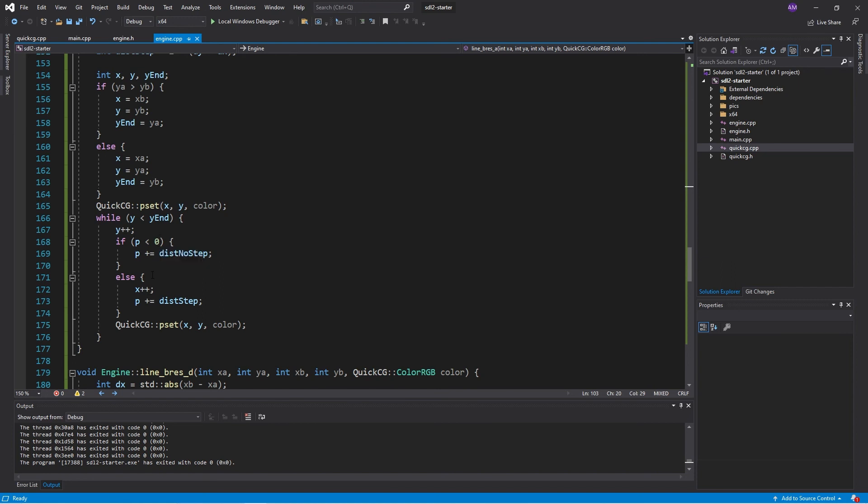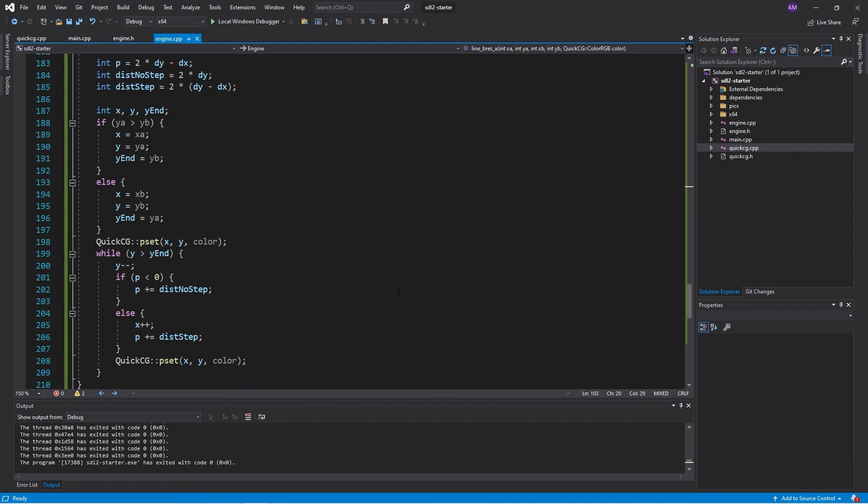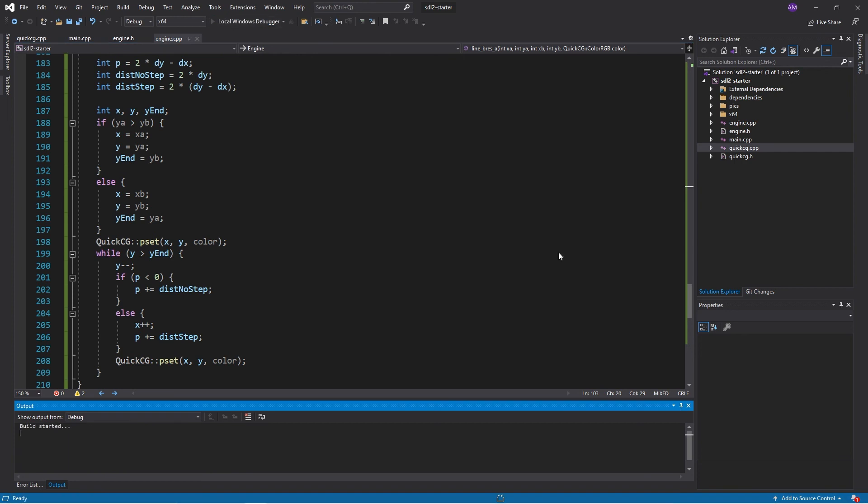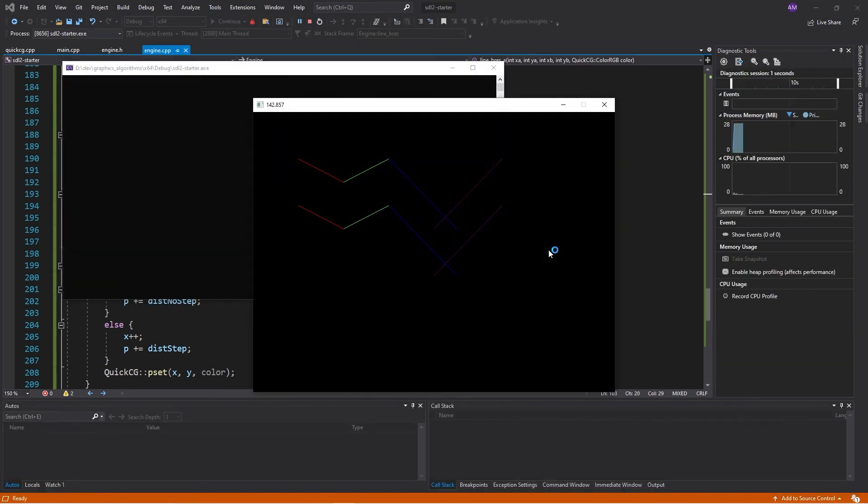So as we go up our line goes to the right. Similarly, if our slope is negative and steep, then as we go down our line goes to the right.